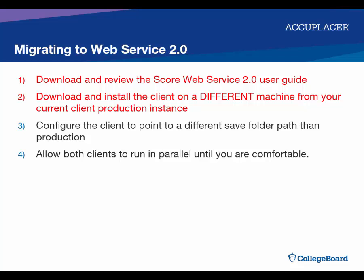Accuplacer does not recommend running multiple instances of Web Service on a single machine, as it can cause issues with file downloads. Once your 2.0 client is installed, configure the client to point saved SCORE files to a folder path that is different from your production Web Service folder path. This will prevent possible duplicate files being processed for your student information upload. Allow both versions of the client to run in parallel until you are comfortable with the results — you should see the same SCORE files being downloaded by both clients to the separate folder paths.